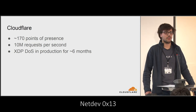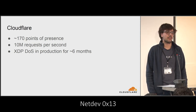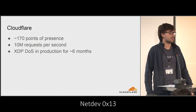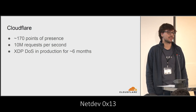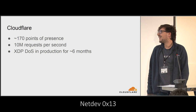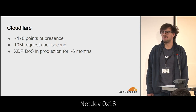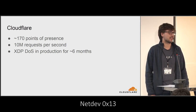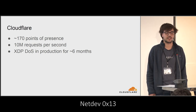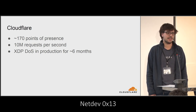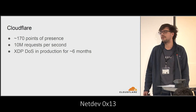A bit about us. We are kind of a big content delivery network, so we serve lots of cat pictures. We have about 170 points of presence around the world where we serve the cat pictures, and we do about 10 million HTTP requests per second. We end up seeing a lot of traffic, a lot of malicious traffic, and a lot of denial-of-service attacks. We've had our new XDP-based solution in production for about six months now.